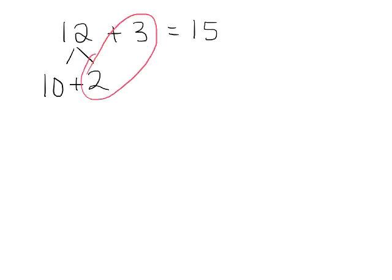For example, if we had 12 plus 3, that equals 15. How do we know 12 plus 3 equals 15? We can take the 12 and break it up, decompose it to 10 plus 2. Then we can say 2 plus 3 is 5, and so 10 plus 5 is 15.